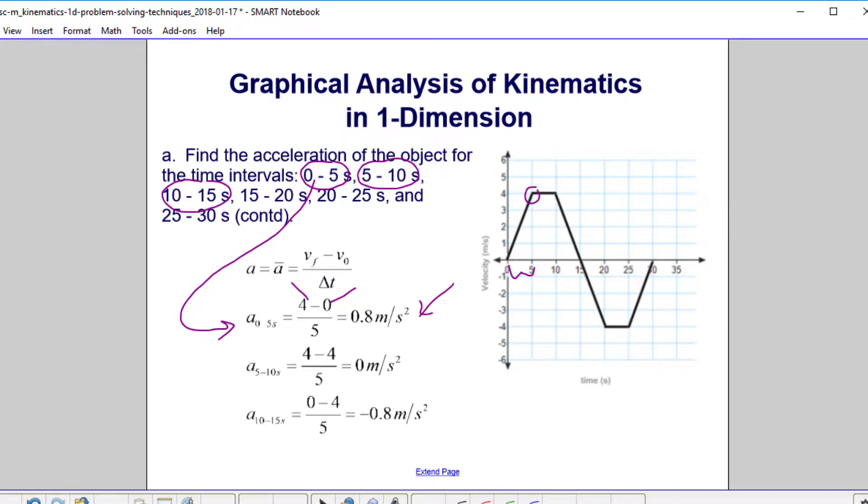Now, let's go to the next one. At 10 seconds it's 4, and also at 5 seconds it's 4. So you have 4 minus 4 over 5, that's 0 meters per second squared. What do you notice about this acceleration? It's just the slope of the line. The average acceleration is equal to the acceleration at any point, so we're just taking the slopes of these various lines.